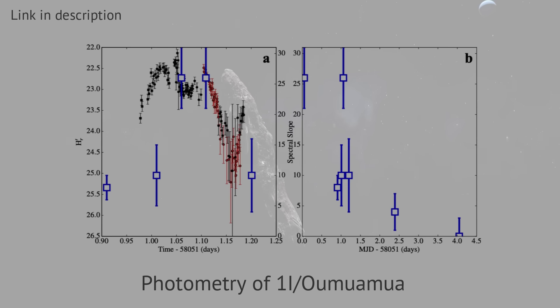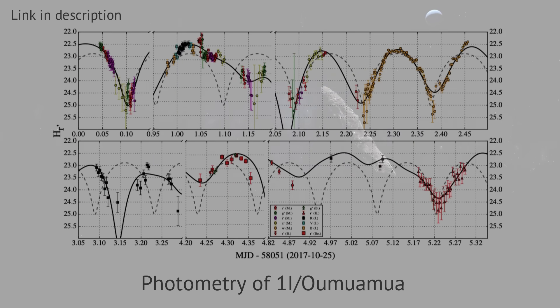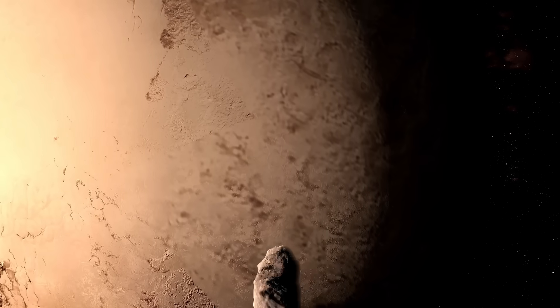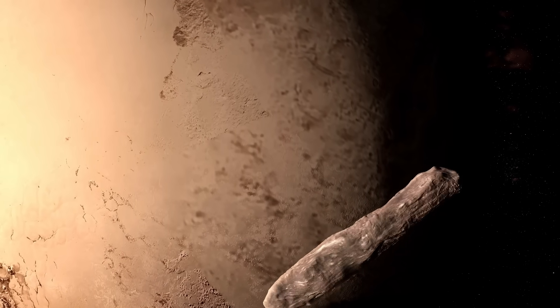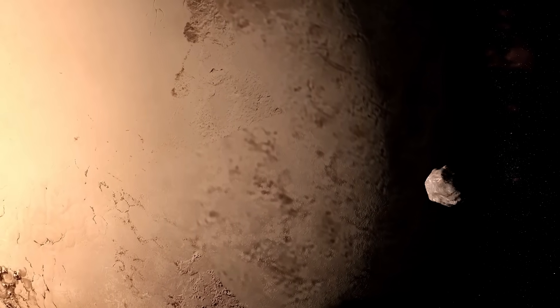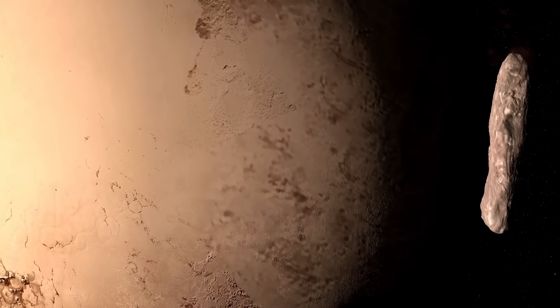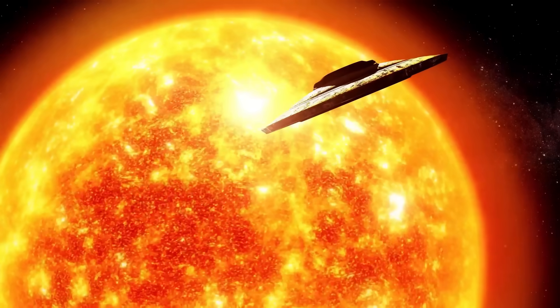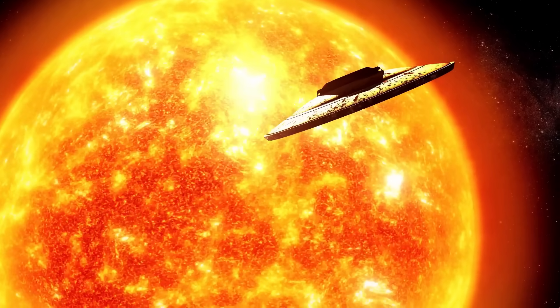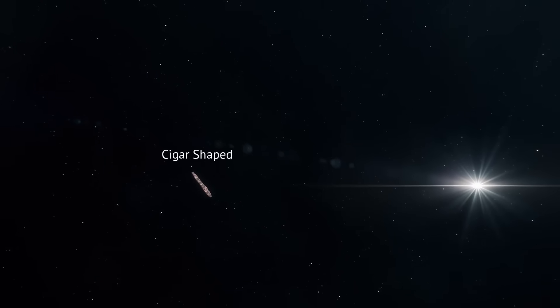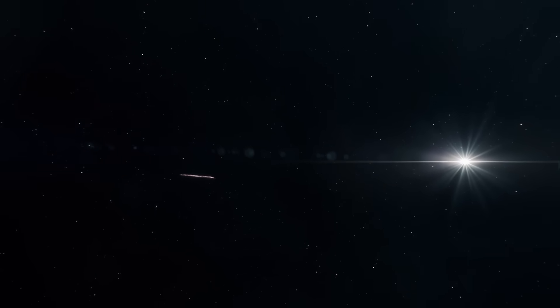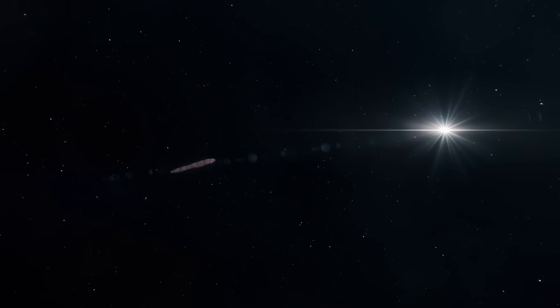Photometry collected by multiple observatories around the world showed that every 7.3 hours, the object's light surged almost tenfold, then faded just as sharply. Such wild swings point to a body that's either extra long or extra flat and tumbling end over end, like a cigar or perhaps a saucer seen edge on. Because no telescope has ever resolved the object itself, even to this day, both shapes remain on the table.